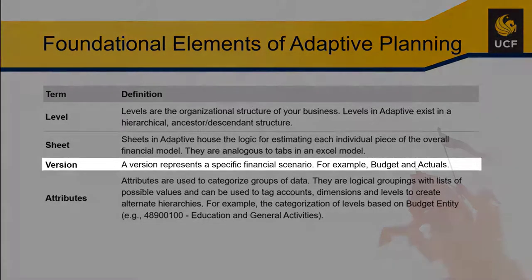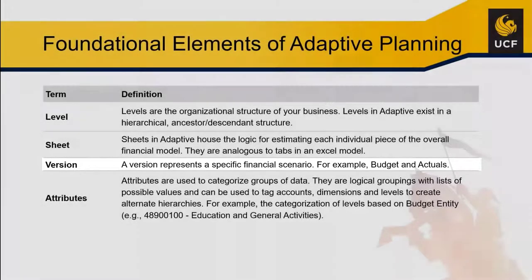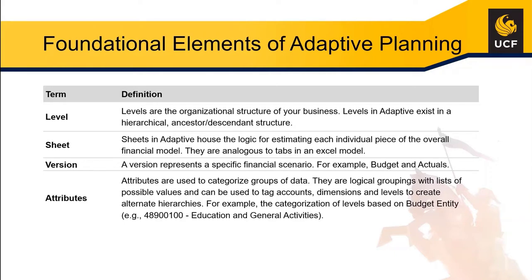The next item is a version. A version just represents a specific financial scenario, as noted on the slide. This one will make more sense once we actually dive into it. There are different versions: you have a budget version, an actual version, and a forecast version. When you're entering data, you are entering it based on specific scenarios set up in Adaptive. It's critical to keep those in mind because you have to make sure you've selected the right version for your data entry.